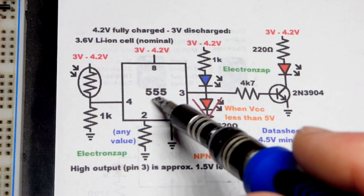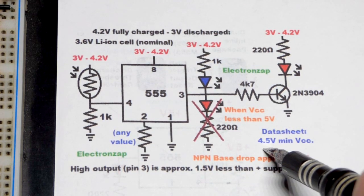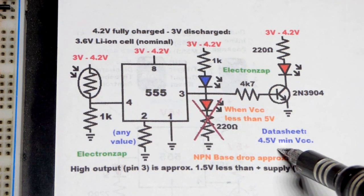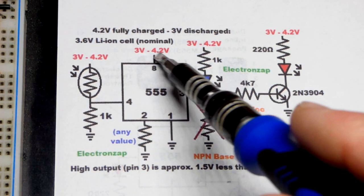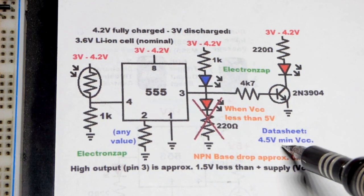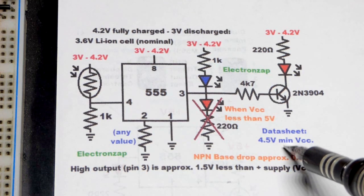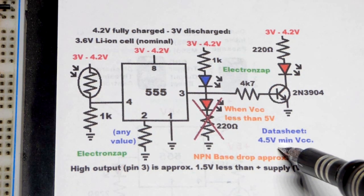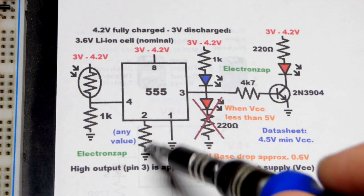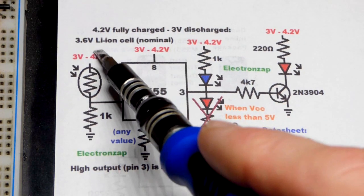When you look at the datasheet for the 555 timer, it says the minimum voltage is 4.5 volts. If you look at the datasheet you won't even think this circuit would work, but as we'll see, it works just fine. I don't know the absolute limitations, but that's what you'll see on the datasheet.